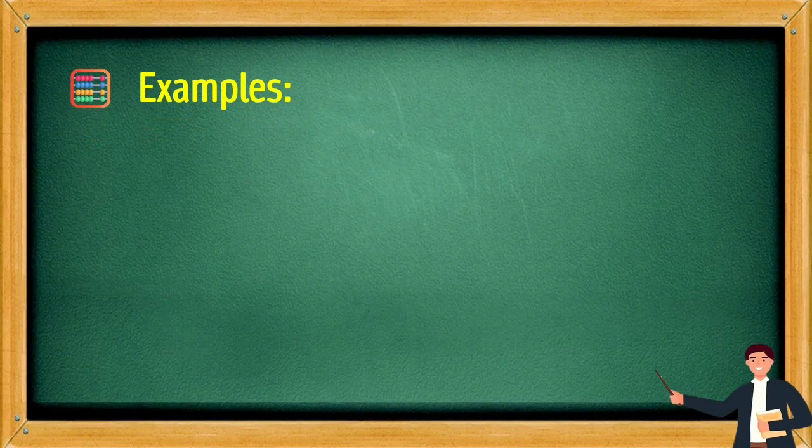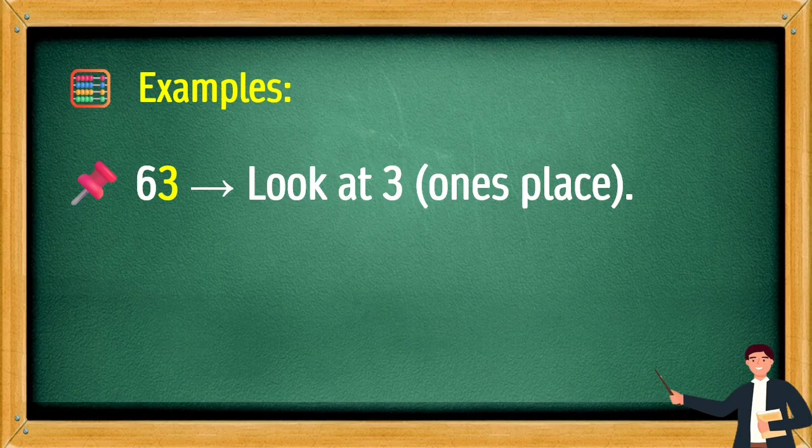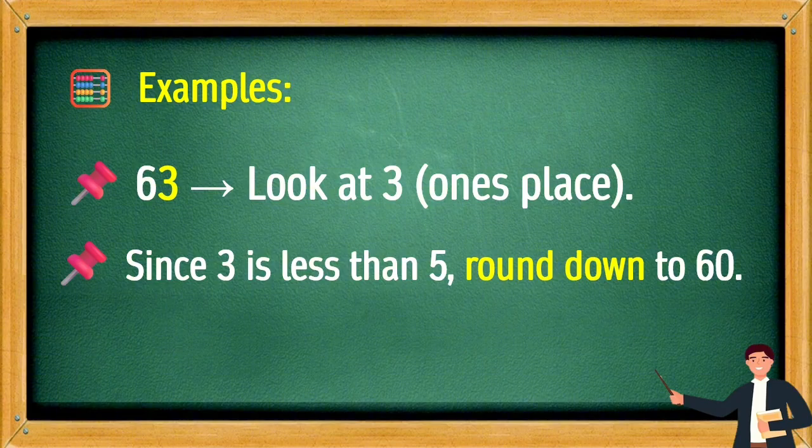Example number 2. 63. Look at 3 at one's place. Since 3 is less than 5, round down to 60.